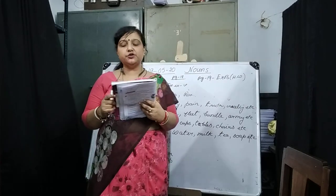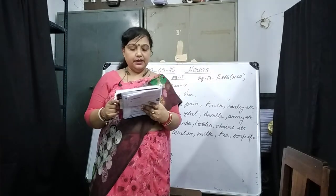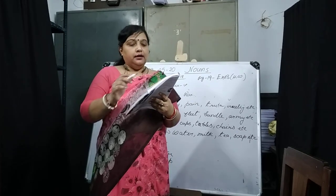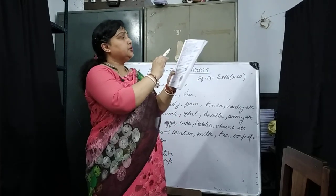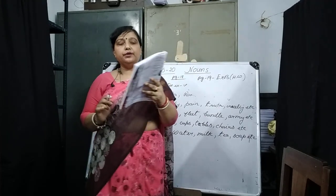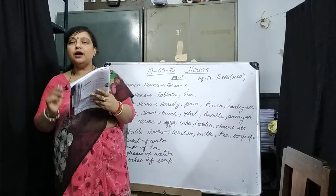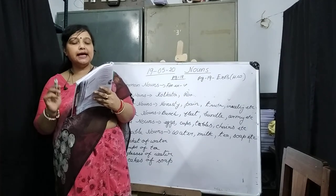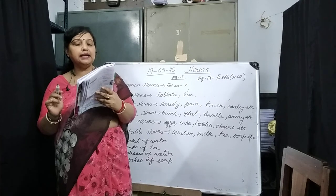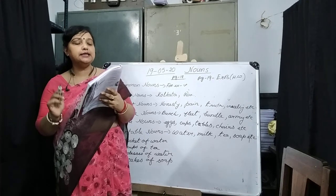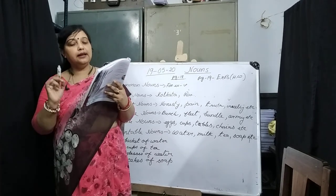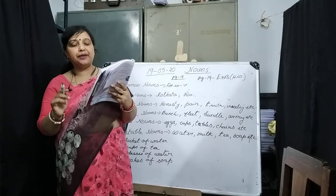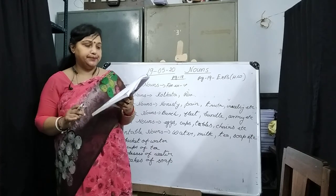Page 21: find the opposites of these abstract nouns from the word grid. Number 1: sorrow — happiness. Number 2: cowardice — courage. Number 3: ugliness — beauty. Then: truth — lie, hatred — love, foolishness — wisdom, pleasure — pain, dishonesty — honesty.